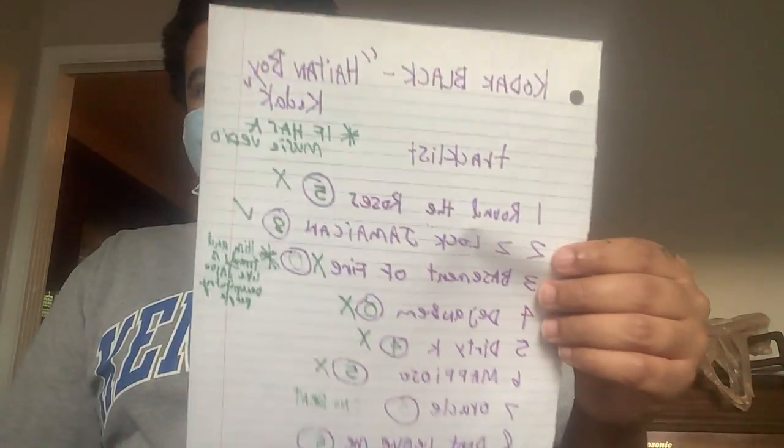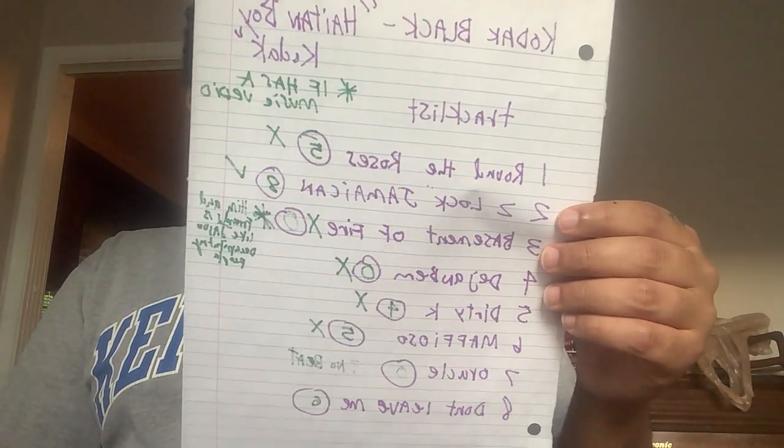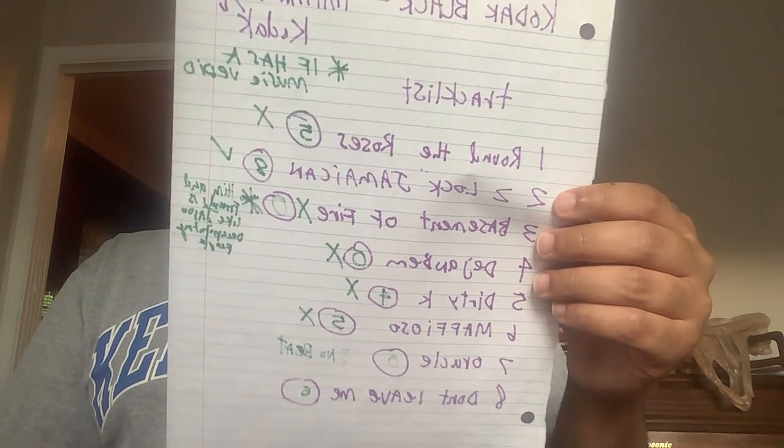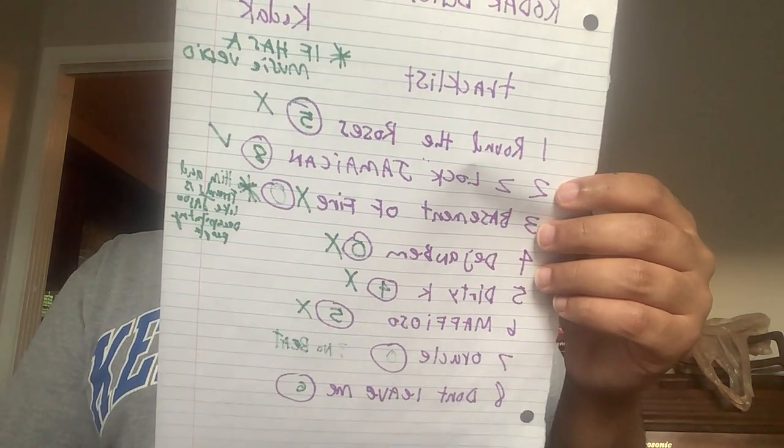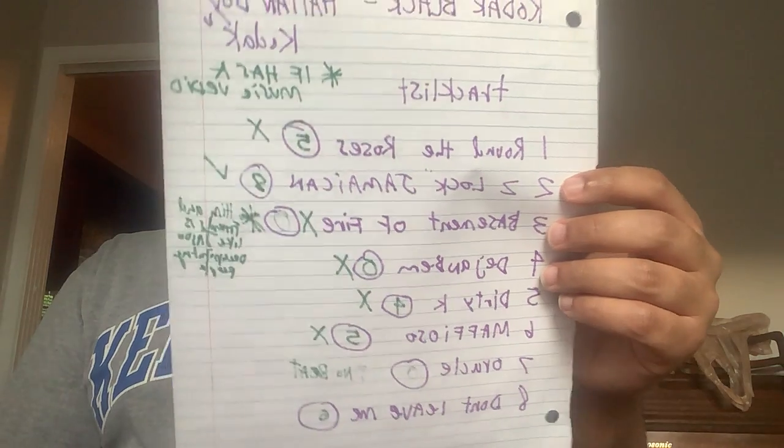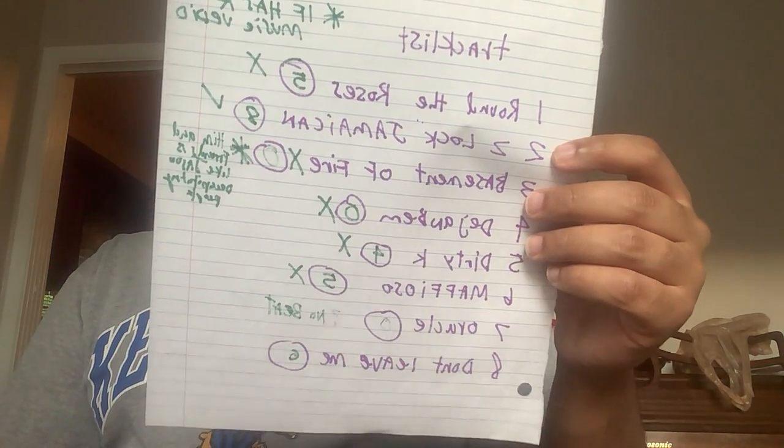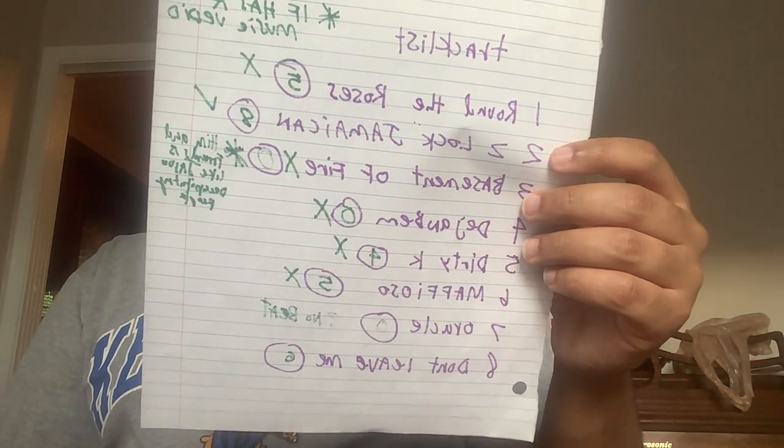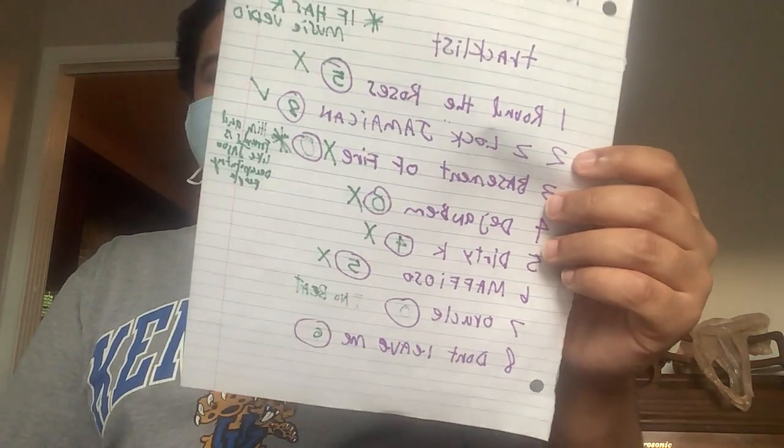Kodak Black, Haitian Boy Kodak. Alright. Thrown in the Roses: five. Zoe Lock Jamaican: eight. Basement on Fire: zero—I don't know how to say that word. Doctor D: zero. Dirty K: four. Mafioso: five. Oracle: zero. Don't Leave Me: zero.